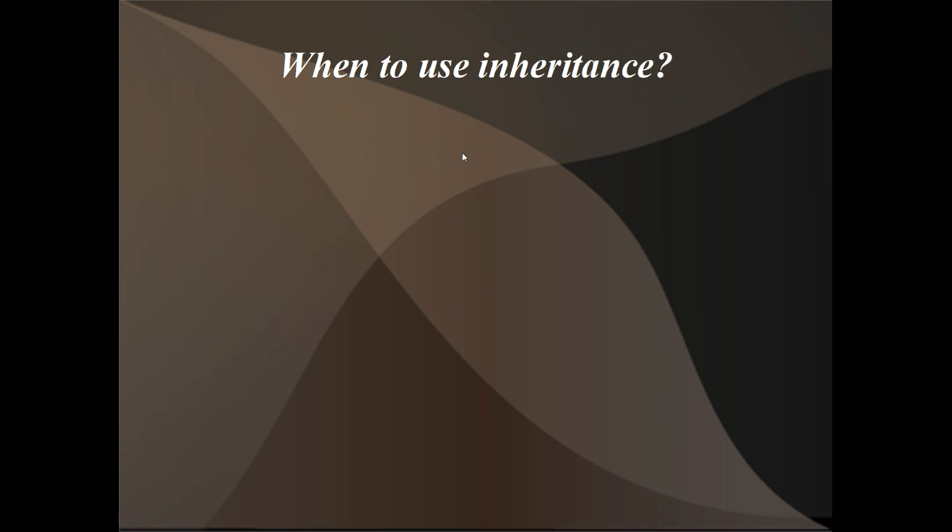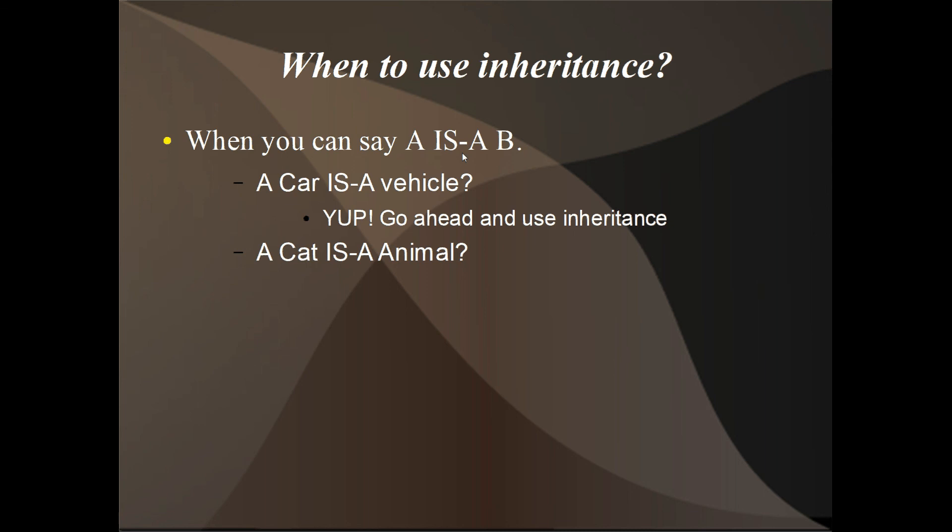So when to use inheritance. You want to use inheritance when you can say class A is B. So class A is a class B. An example would be a car is a vehicle. Yep, that makes sense. Go ahead and use inheritance. A cat is an animal. Yep, go for it. You see how when we say these things, cat is an animal. That makes sense.